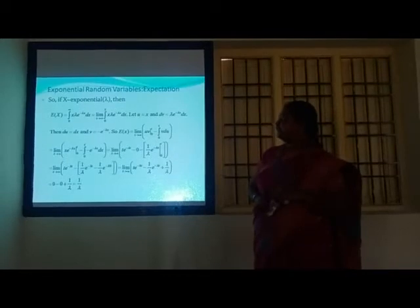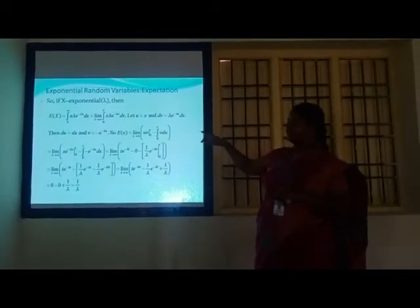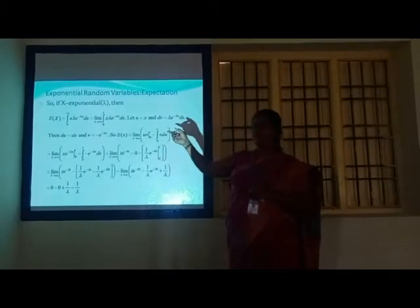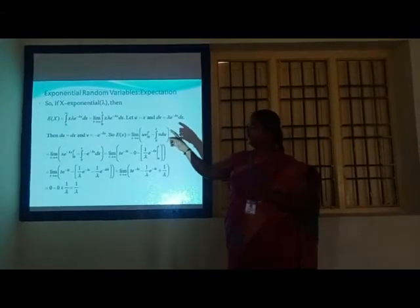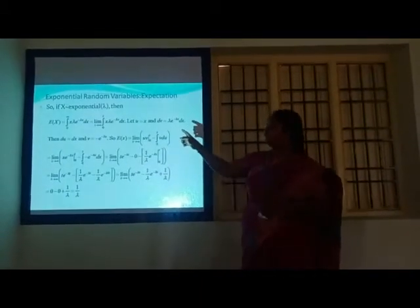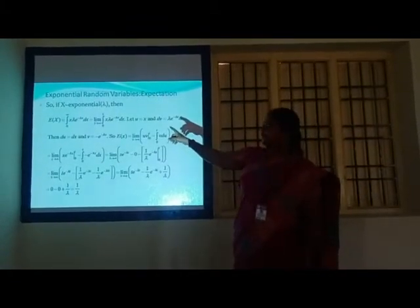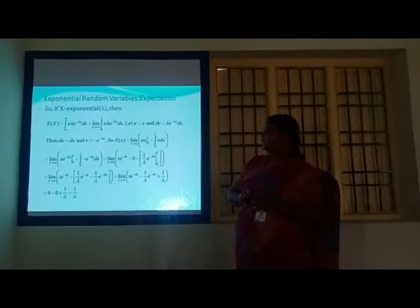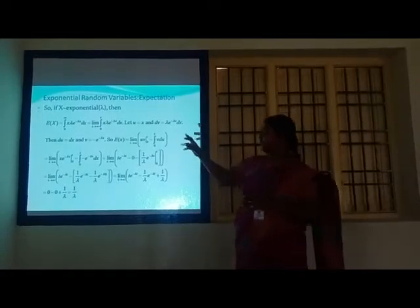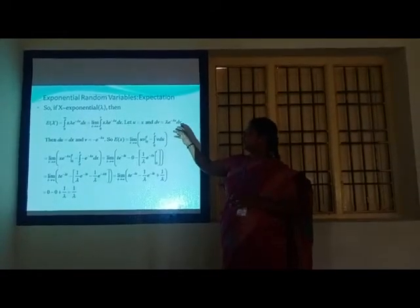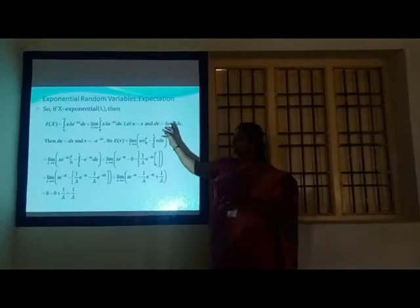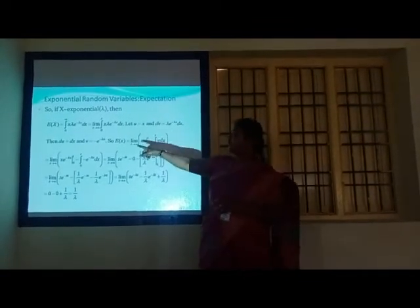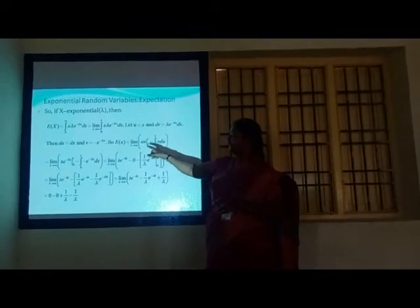Exponential random variables expectation: E[X] equals the integral from 0 to infinity of x·λe^(−λx) dx. Taking the limit as t tends to infinity of the integral from 0 to t, let u = x and dv = λe^(−λx) dx, so du = dx and v = −e^(−λx).